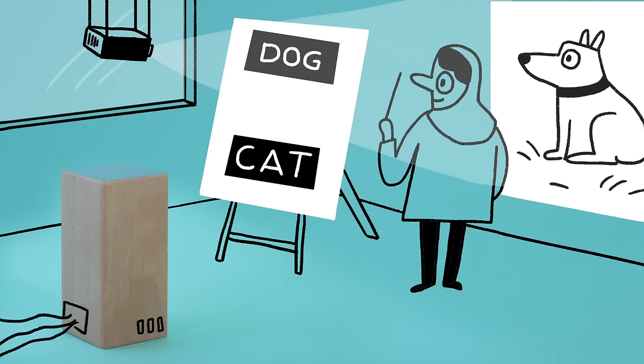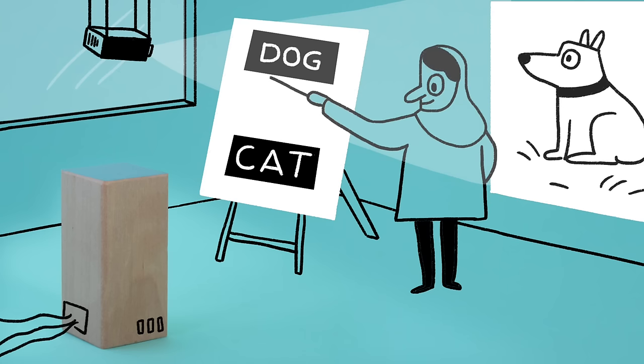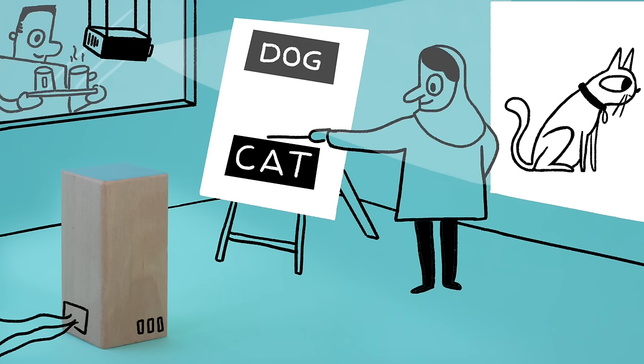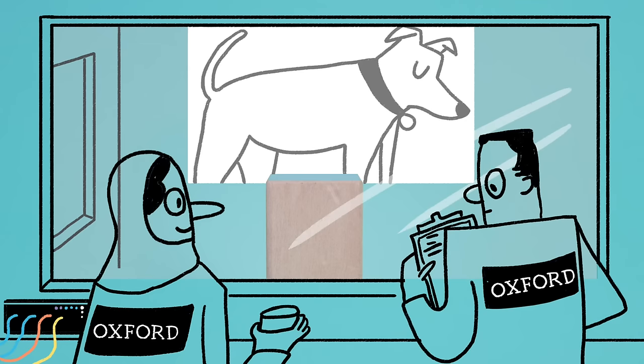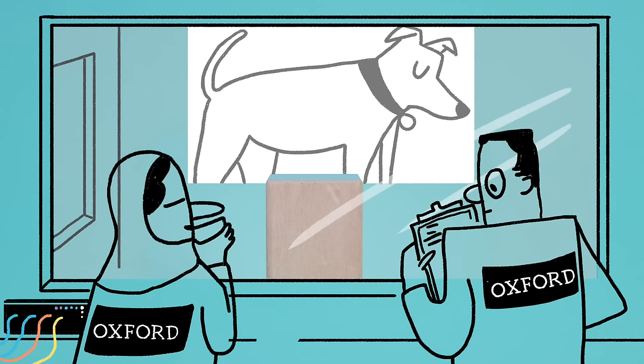You could begin by feeding it images and telling it, this one's a dog, that one's a cat. A computer program to learn will seek statistical patterns within the data that will enable it to recognize a cat or a dog in the future.